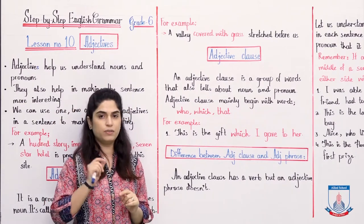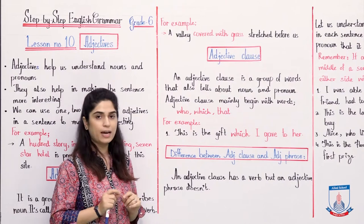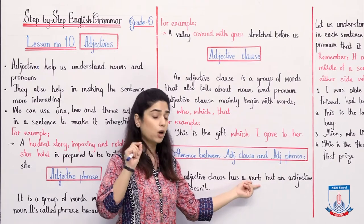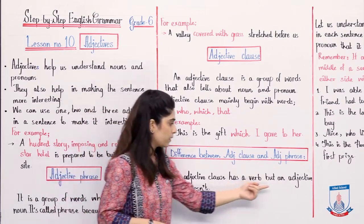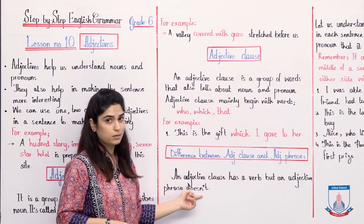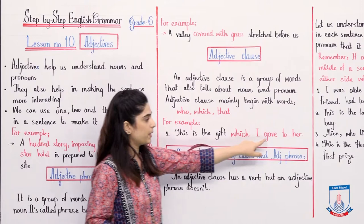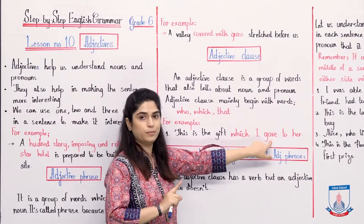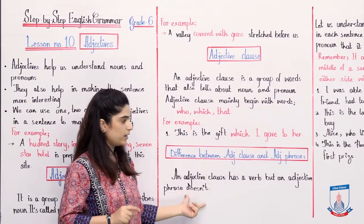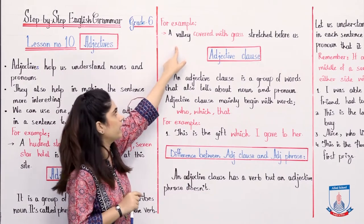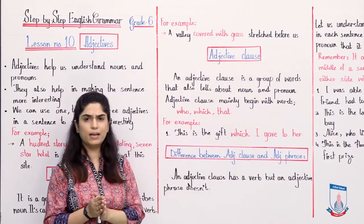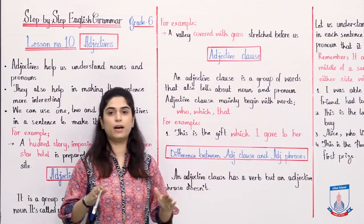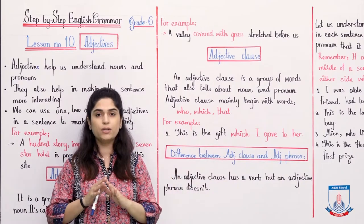The difference between adjective clause and adjective phrase: an adjective clause always has a verb. In the example 'which I gave to her,' the verb is 'gave.' There is always a verb in an adjective clause. But in an adjective phrase — remember, the example was 'covered with grass' — there is no verb visible in the red part. So remember: the difference between an adjective clause and an adjective phrase is the presence or absence of a verb. I would like you to take a minute to let that sink in.